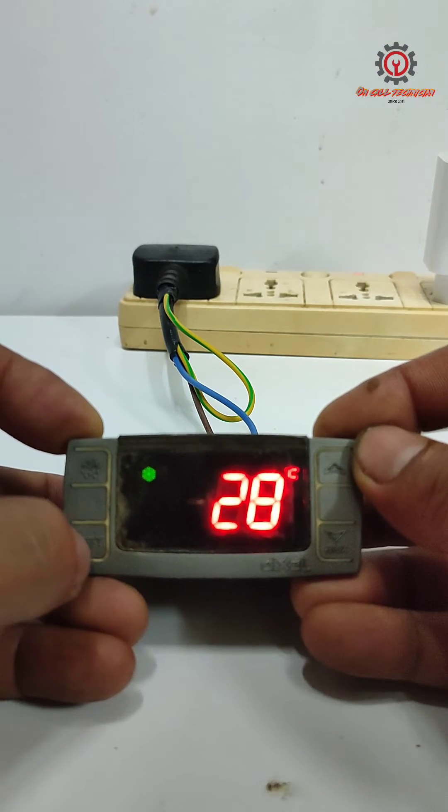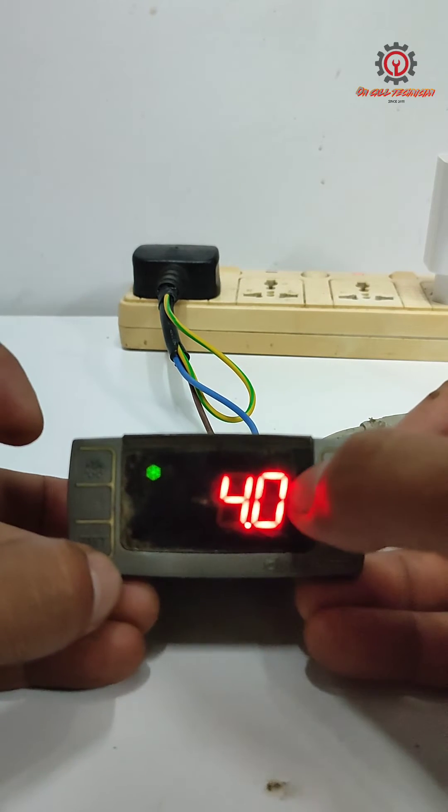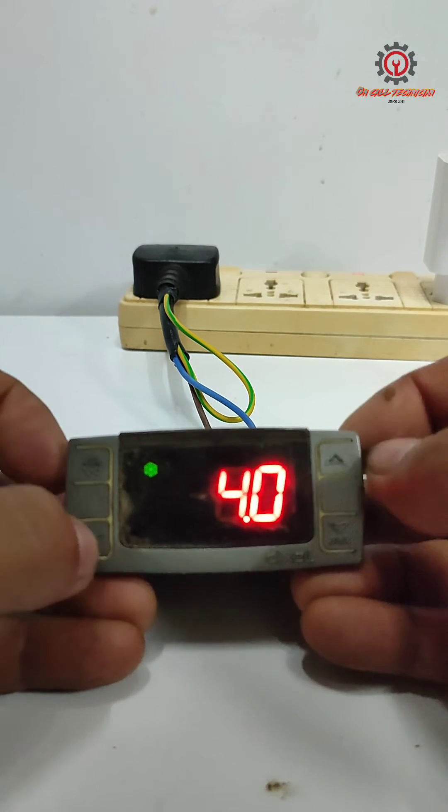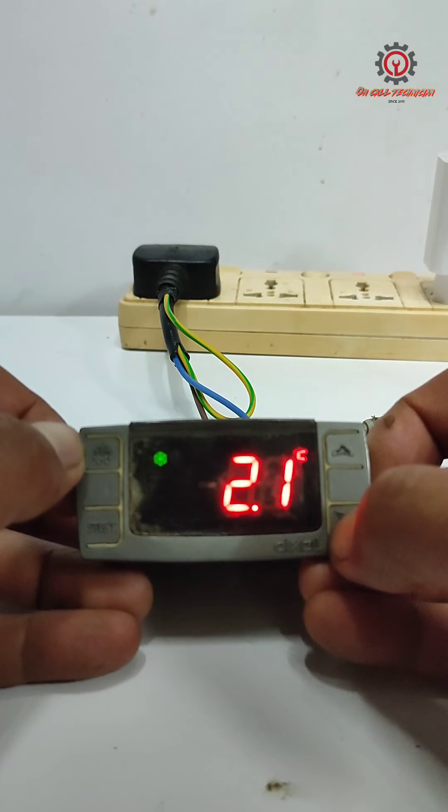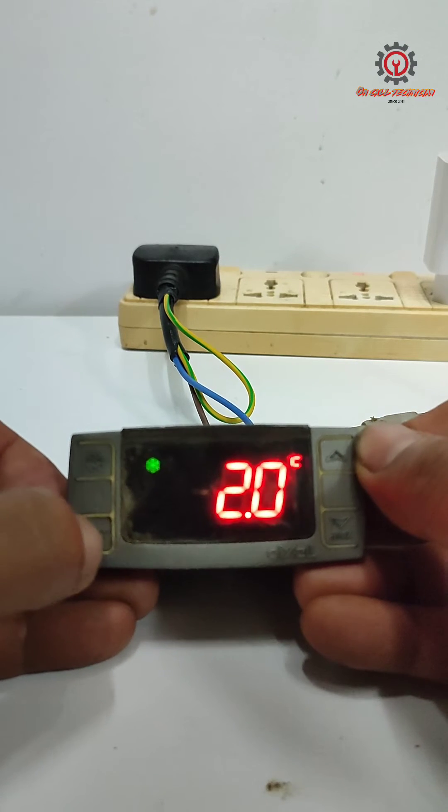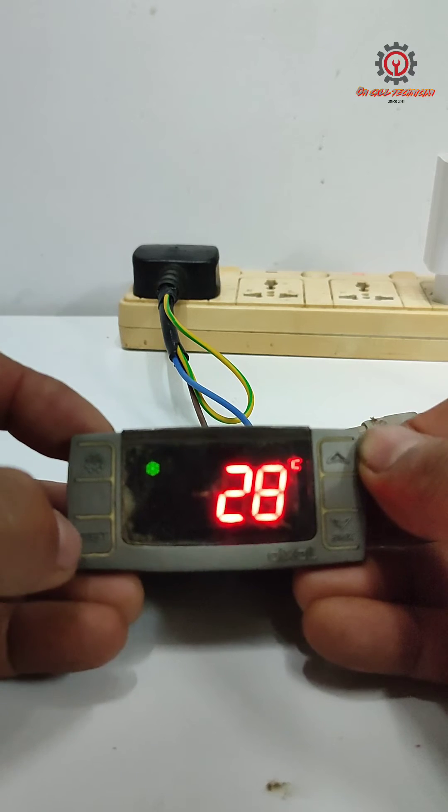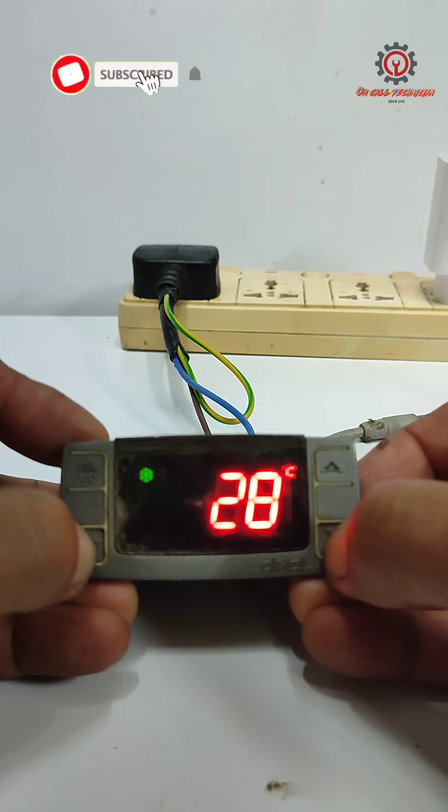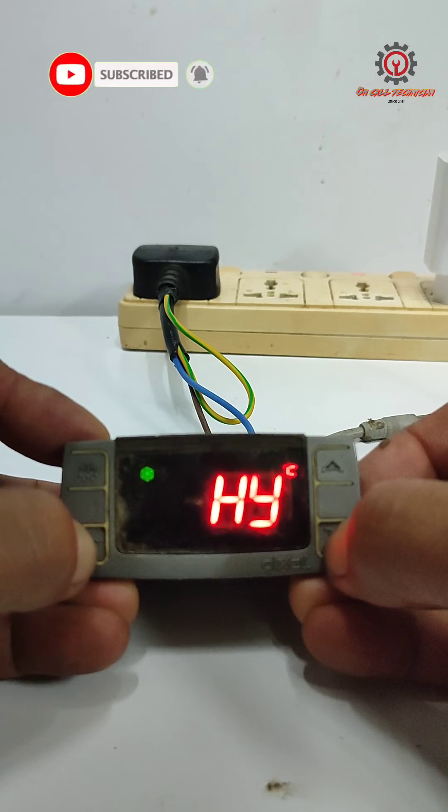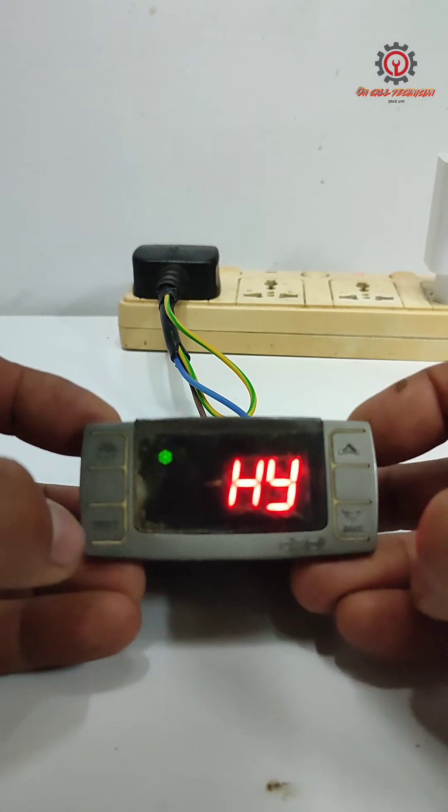Just long press. When the degrees Celsius is blinking, we can now change that to 2 and press set to memorize. Then let's press the set button and the down button for 3 seconds, and when HY appears, let's press set.